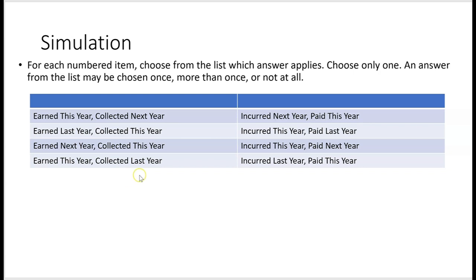What was earned this year and collected last year? That would be the beginning balance of unearned revenue, because the beginning balance was collected in the prior year and will be earned this year. What was incurred next year as an expense but paid this year? That would be the ending balance of prepaid insurance or prepaid rent — you paid for it this year but won't incur it as an expense until next year.